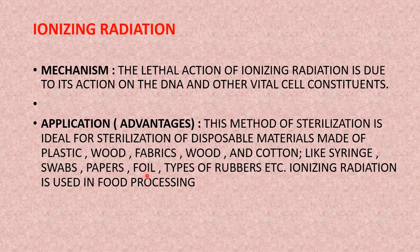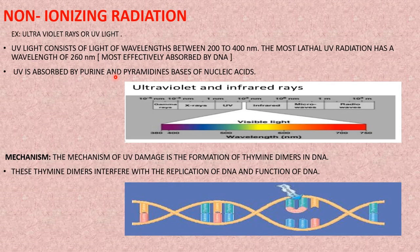Ionizing radiation is mainly used in the food industry and also to sterilize disposable materials made of plastic, wood, fabrics, and cotton — items that cannot be sterilized by filtration or heat, such as syringes, swabs, papers, foils, and rubber. Food processing also uses ionizing radiation. That covers ionizing radiation in the sterilization process.